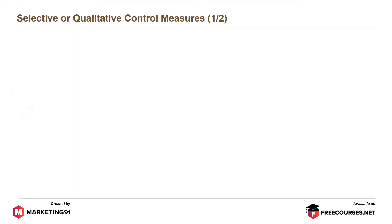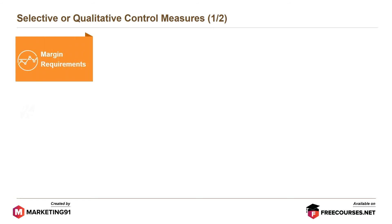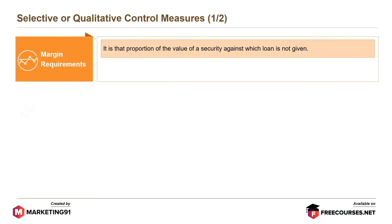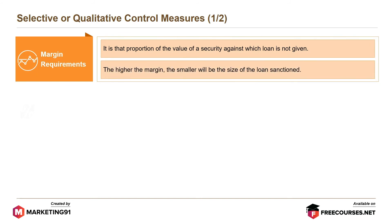Moving on to selective or qualitative control measures. The first is margin requirements. It is the proportion of the value of a security against which a loan is not given. The higher the margin, the smaller will be the size of the loan sanctioned.